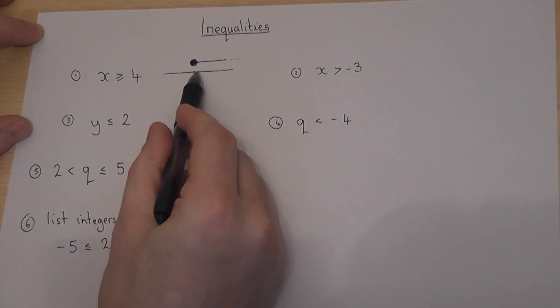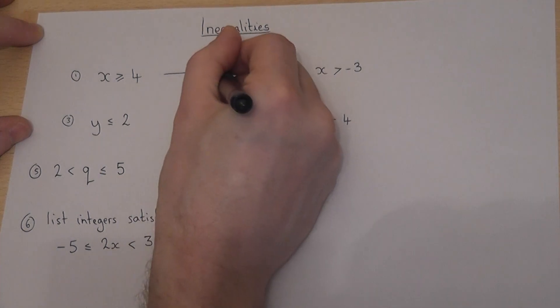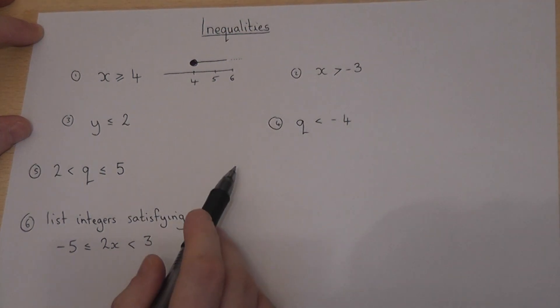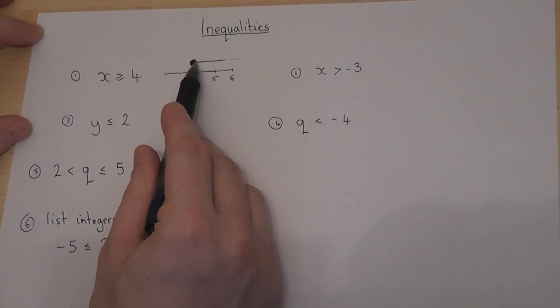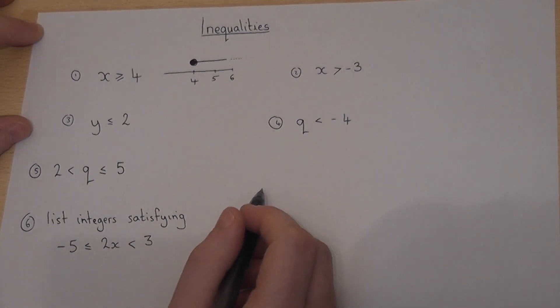And then draw a line to the right. So it could be 4, 4.1, 4.2, it could be 5, it could be 6, and so on and so forth. So that number line represents the options which x could be.